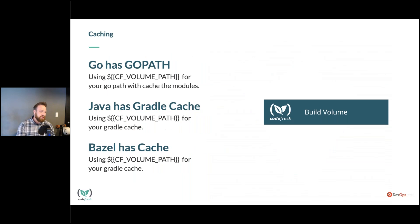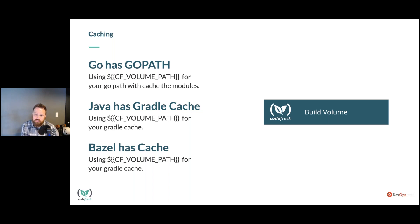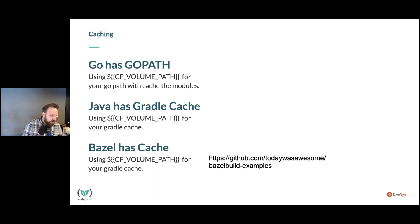Bazel is really the best at only rebuilding changed components. We're going to look at those individually. With Go, I can actually set my Go path to be my CI volume — my CF_VOLUME_PATH, if I'm using Codefresh. If you're using your own distributed caching system, you're going to want to specify that it uses that volume in all of your build arguments, and that will allow it to be reusable. Bazel does the same thing, and we're going to go deeper into Bazel.